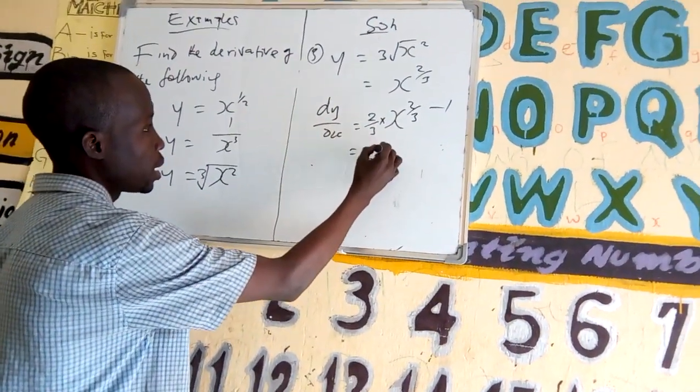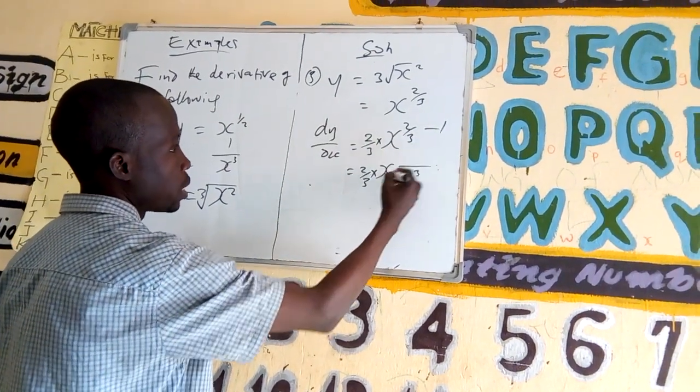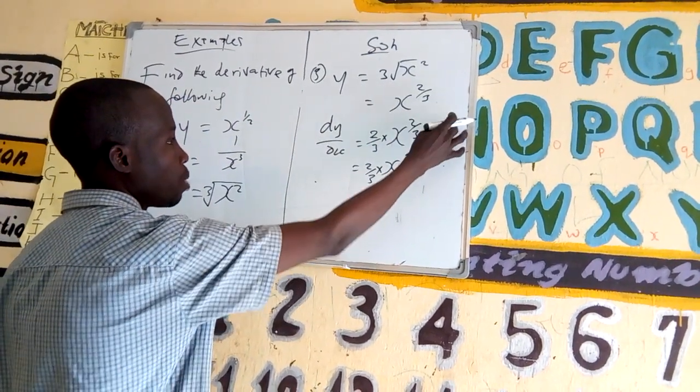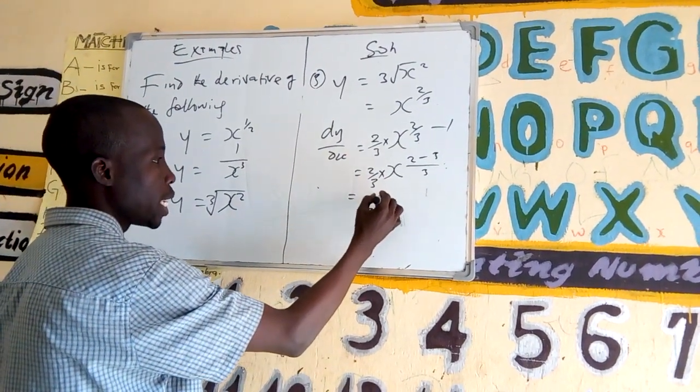This is 2 over 3 times x. The exponent: here is 2, here is 3. This becomes 2 over 3x to the power of negative 1 over 3.